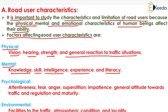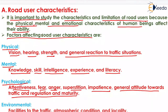The next factor is the psychological factor: attentiveness, fear, anger, superstition, impatience, general attitude towards traffic and regulation, and maturity. For example, during a traffic jam condition, if the driver is impatient, it will lead to accidents.